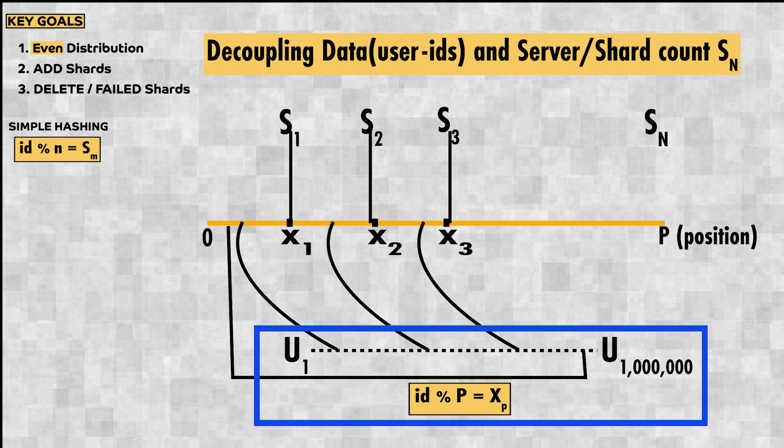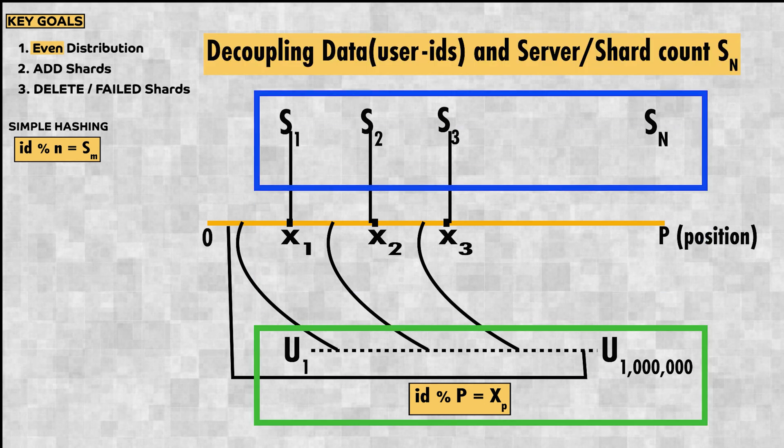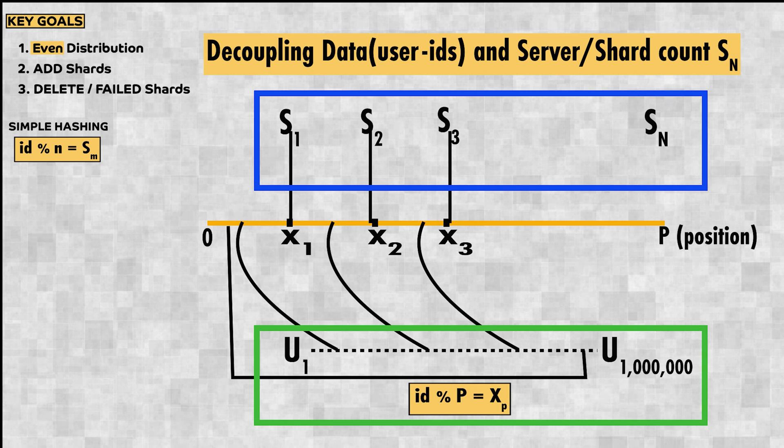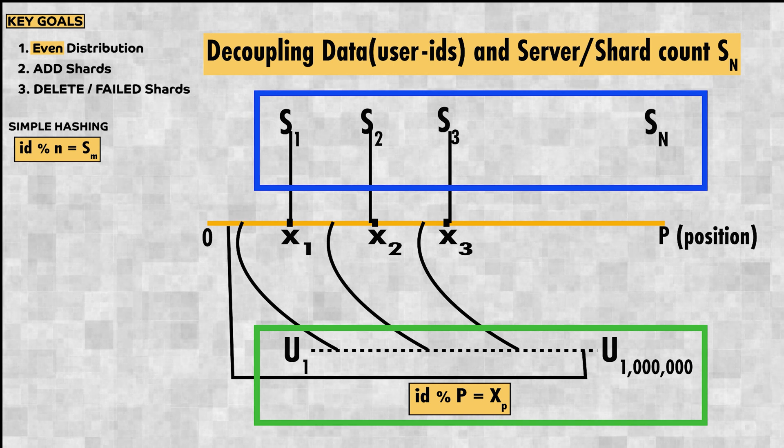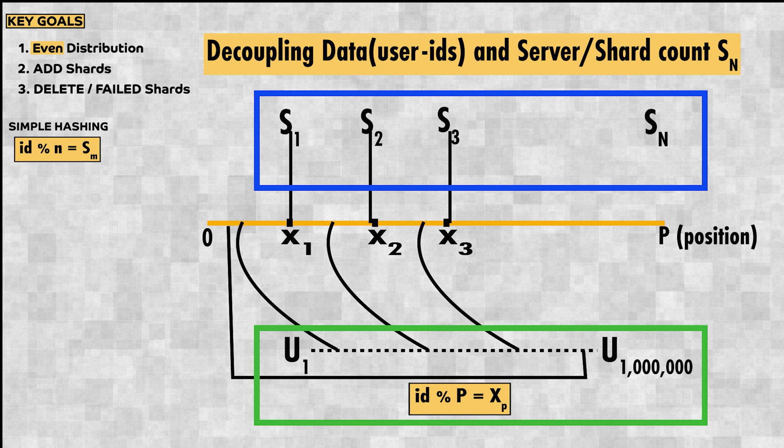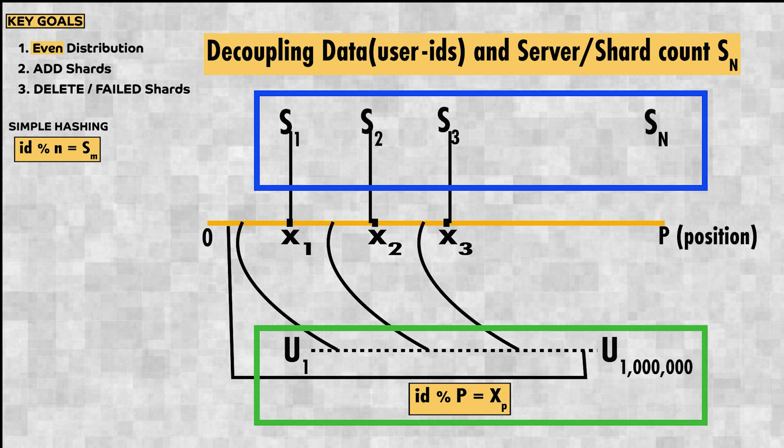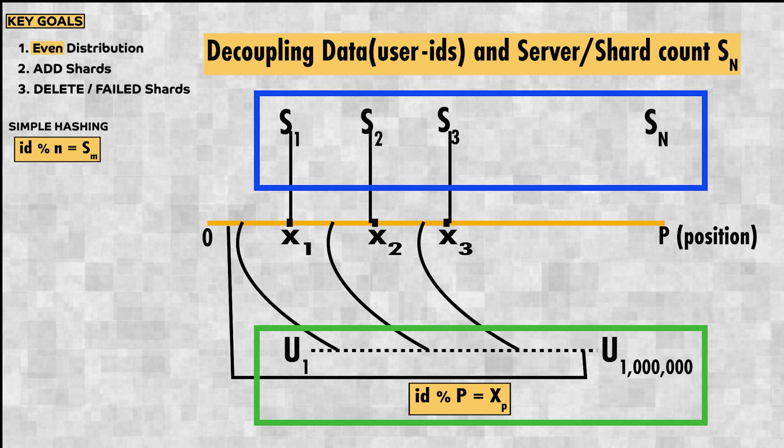With the number line approach, you are decoupling data in the server. You are now agnostic of number of servers to decide which shard the user data will go to. So if you add or remove shards, you are not affecting your hashing and so it does not result in redistribution of data that we saw in simple hashing.